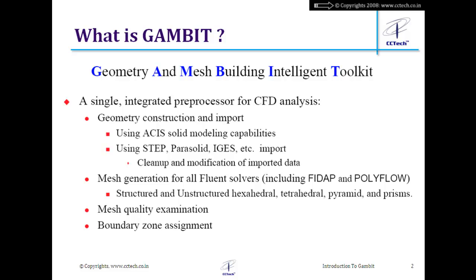For complex geometries, we can use a standard CAD software like Pro/E, CATIA, or SolidWorks to create the model, then export it into standard file formats acceptable by GAMBIT, such as ACIS, Parasolid, or IGES. GAMBIT's import capability can then bring that geometry in.